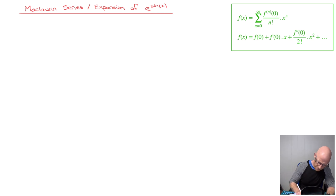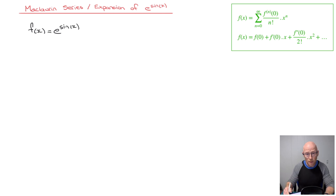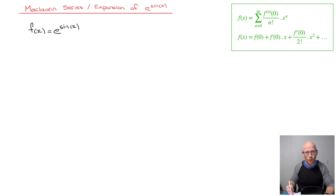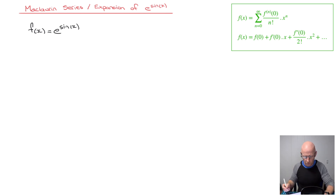First of all, just to make things clear, the function whose Maclaurin series we're going to find here is f(x) = e^(sin x). As I said, we're going to be substituting the Maclaurin expansion of sin x into the Maclaurin expansion of e^x. So a very important starting point is to write down the Maclaurin series for both of those functions.